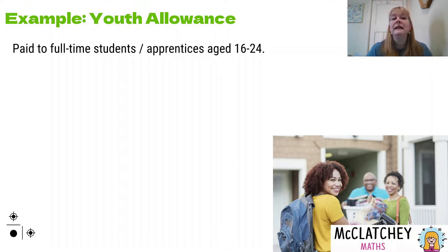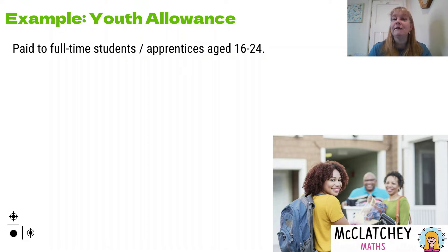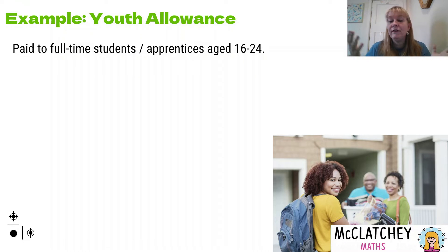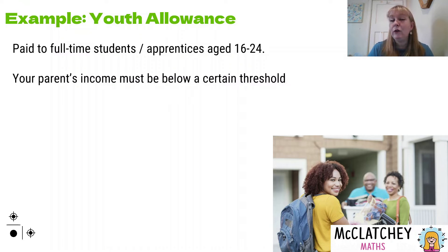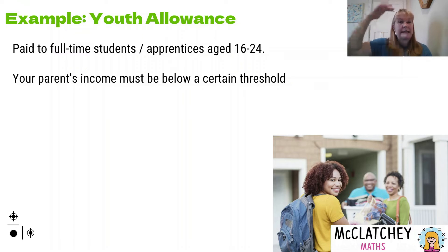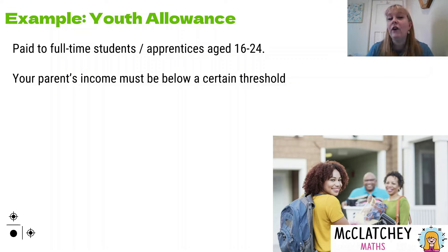Let's talk a little bit about what youth allowance is. It's paid to full-time students — not part-time — or apprentices. The age cutoff is from 16 to 24, so if you have a question where you've got a 30-year-old, you know they're not qualifying for youth allowance. Your parents' income, if you're living at home, needs to be below a certain threshold — that is, below a ceiling amount in order for you to qualify. If you're living away from home and not with your parents, then that's different.